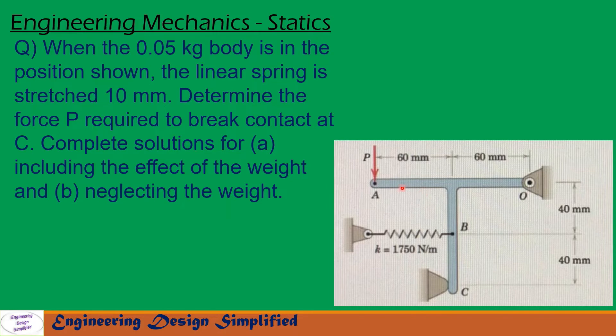In this problem, given is a body - a T-section of mass 0.05 kg arranged like this, hinged at O, and at point C there is a contact and a spring at B is arranged like this. The spring constant is k equal to 1750 newton per meter and the spring is stretched by 10 millimeter.